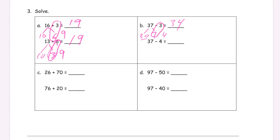And the 37 is 30 and seven, just like we had above. And now we're subtracting four from the seven. So it's seven minus four — we're going to have three left there. And we still have those three tens at 30. And then three left in the ones place. 33.